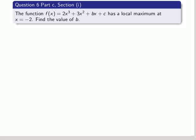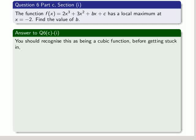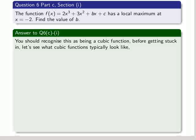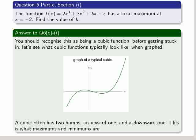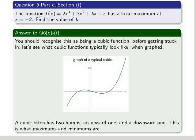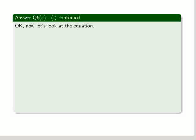We're given that 2 times x cubed plus 3 times x squared plus bx plus c has a local maximum at x equals minus 2. Find the value of b. This is section 1. You should recognize this as being a cubic function. Before getting stuck in, let's look at what cubic functions typically look like. When graphed, a cubic often has two humps, an upward one and a downward one. This is what maximums and minimums are.